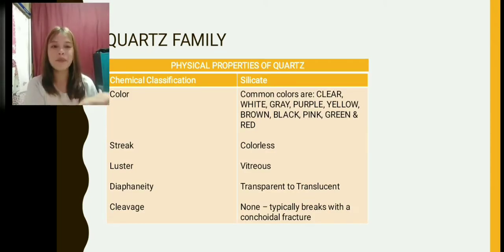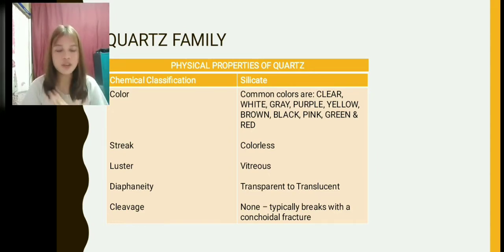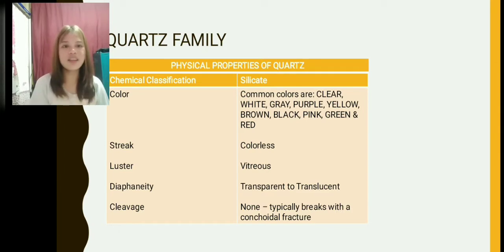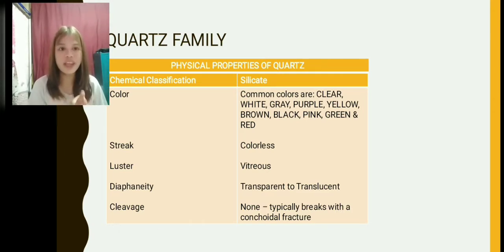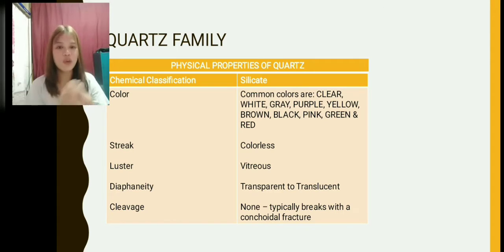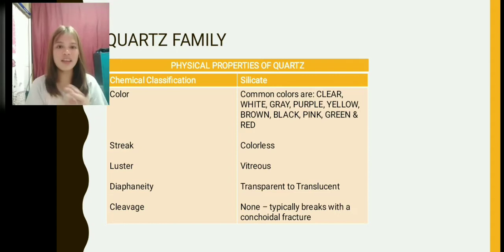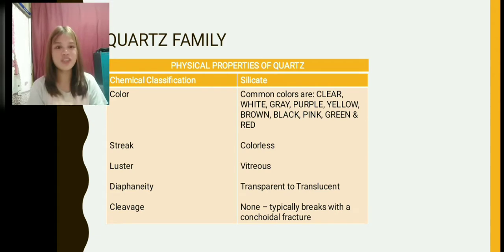These are the physical properties of Quartz. Chemical classification: color — the silicate's common colors are clear, white, gray, yellow, brown, black, pink, green, and red. Streak: colorless. Luster: vitreous. Diaphanity: transparent to translucent. Cleavage: none. It typically breaks with a conchoidal fracture.